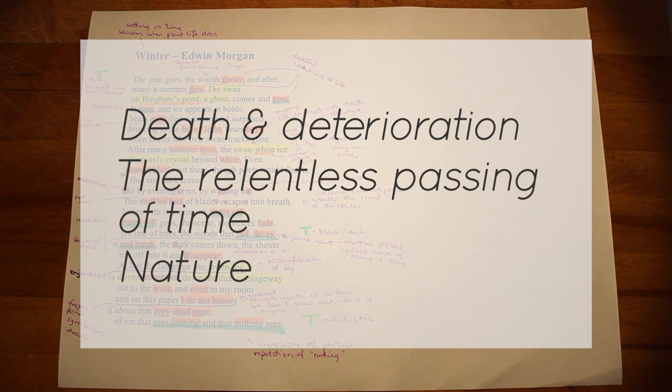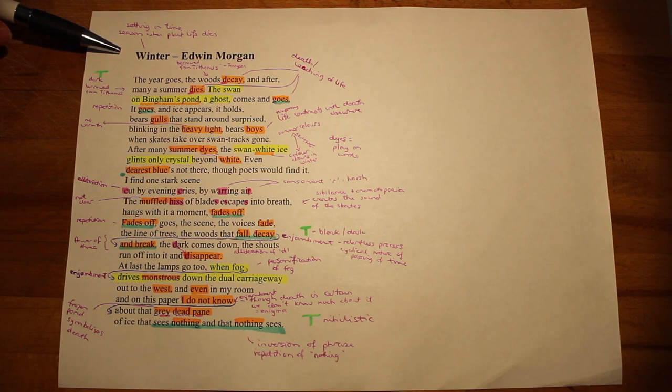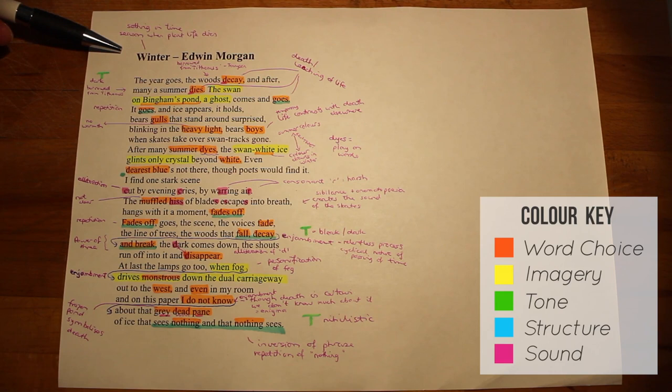The title of the poem, Winter, immediately establishes the setting in time. Winter is the season when plant life, or much of it, dies away and therefore this introduces the theme of death and deterioration right from the start of the poem.